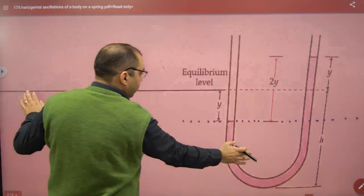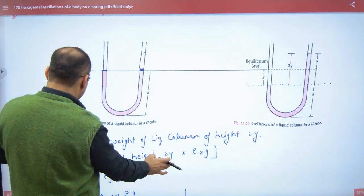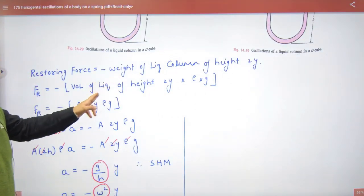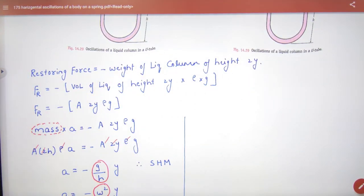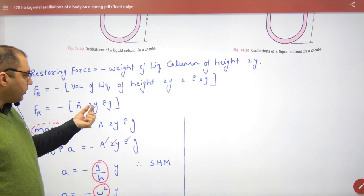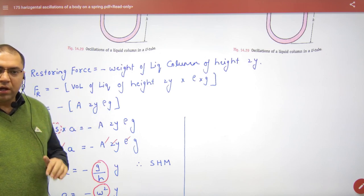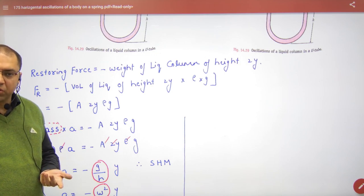So what is this? This is the restoring force. Check this. So the restoring force is A times 2y times density times g. Now the restoring force equals mass times acceleration. Actually, the restoring sign is negative.